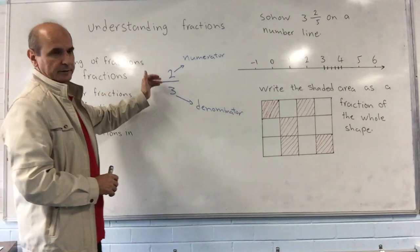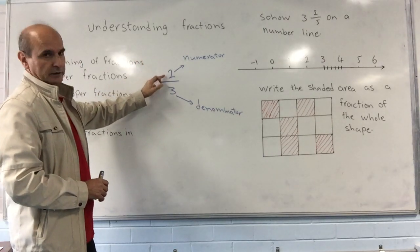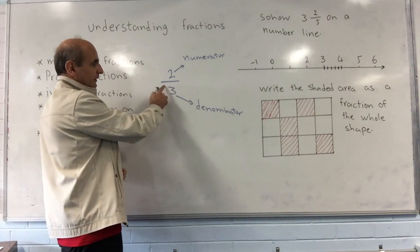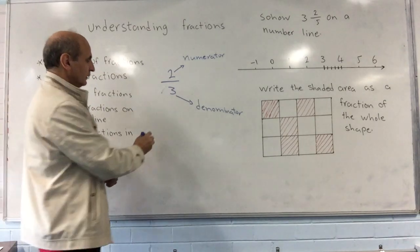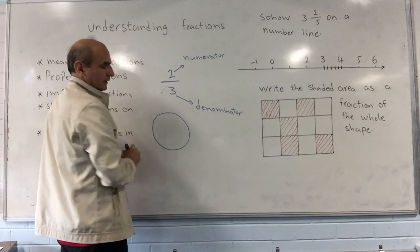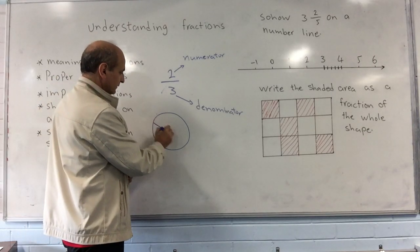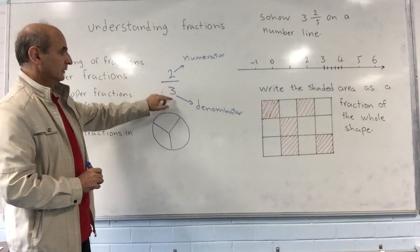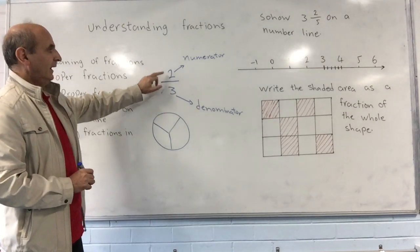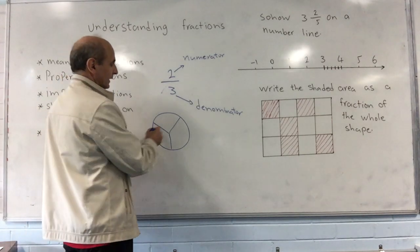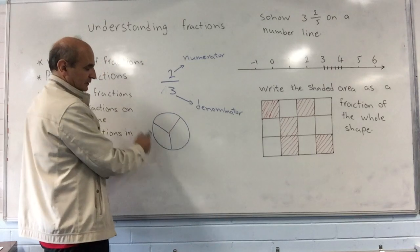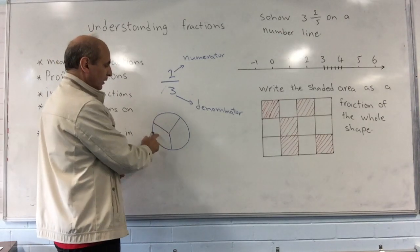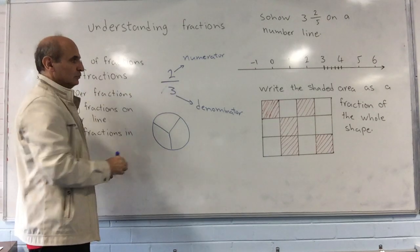That is the meaning of a fraction — how we show it and what each part means. But in terms of the concept, what do we mean when we write two-thirds? This means that the whole part is divided into three equal parts. For example, consider a pizza divided into three equal parts — that is the total. Two is the part we are taking. So if I divide the pizza into three equal parts and take two parts, that is shown as two-thirds.